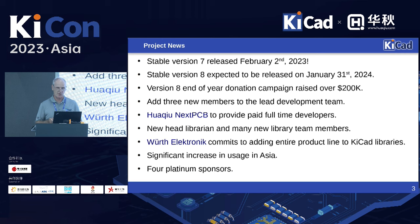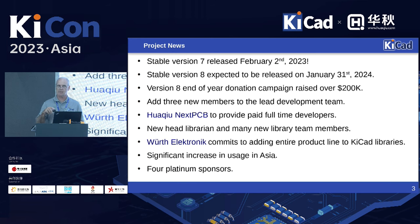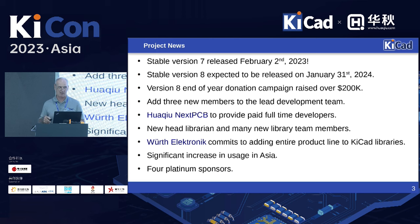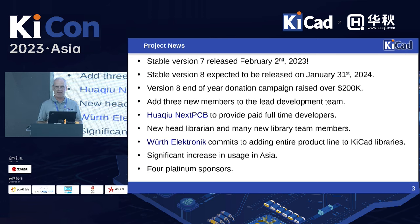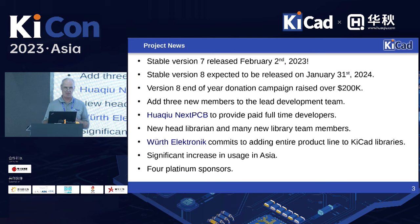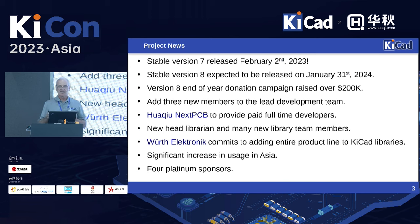Something I didn't expect to see happen: Würth Elektronik — a German company that provides all kinds of electronic components — is in the process of adding their entire product line to the symbol, footprint, and 3D model libraries. That's significant for a commercial company, because KiCad has strict rules about licensing. They've stepped up in a big way, and I'm hoping this will be a watershed event where other commercial companies will want to contribute their product lines too.